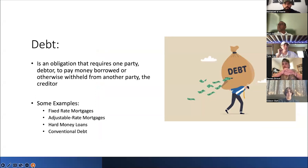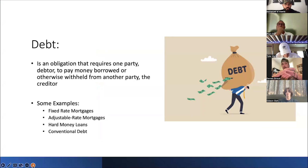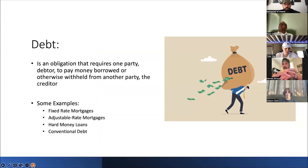Debt is pretty much an obligation that requires one party, a debtor, to pay money borrowed or otherwise withheld from another party, the creditor. That's your general simplistic definition of debt. In real estate, some examples are fixed rate mortgages, adjustable rate mortgages, hard money loans, and conventional debt — those are the top four examples.